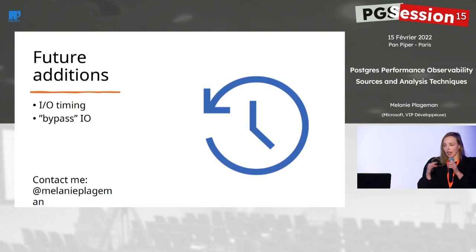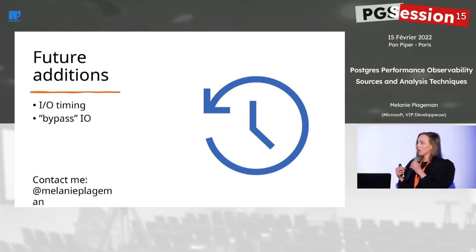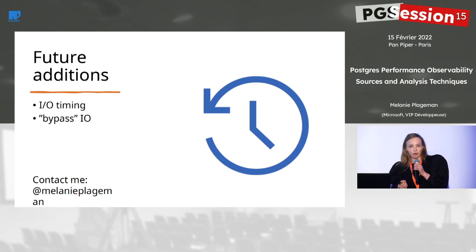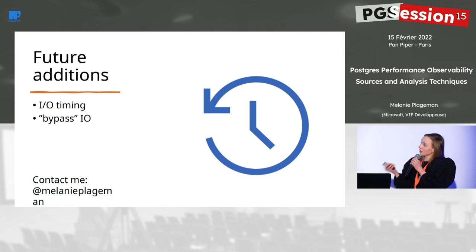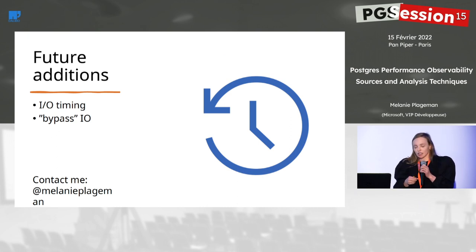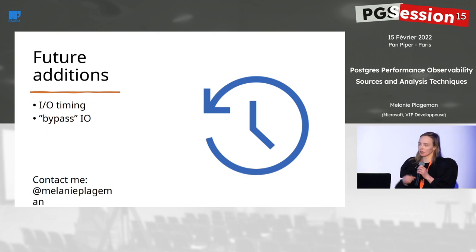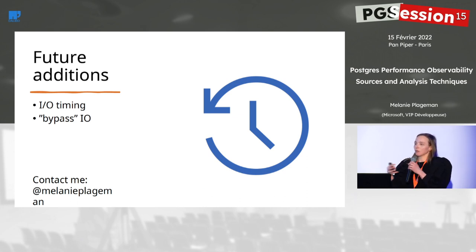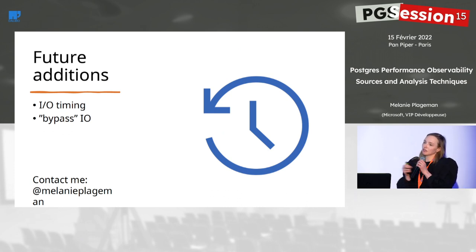What haven't we added yet? The two next steps for pgstat.io are adding timing — right now there is the count of blocks read or written but not block read time or block write time — and bypass IO, which refers to various operations in the database that do not go through shared buffers, such as creating indexes or CREATE DB. Those are not tracked anywhere right now in any IO statistics, and we want to add those to pgstat.io.